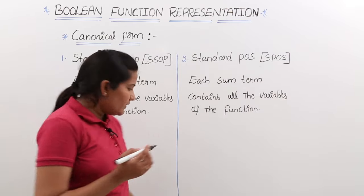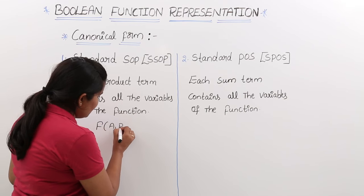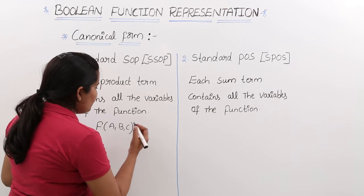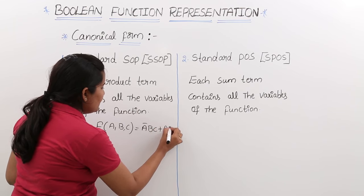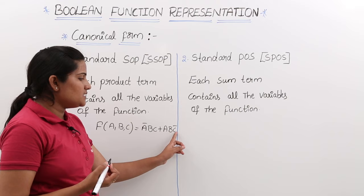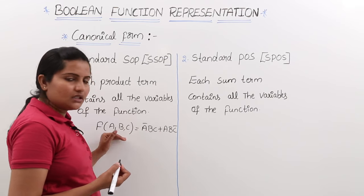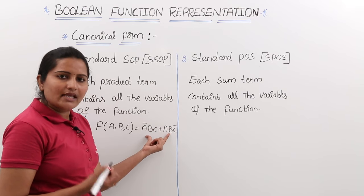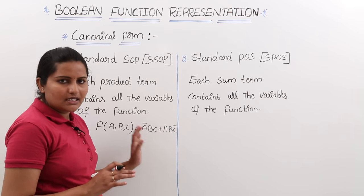For example, take the function f(a, b, c). By seeing itself you can say this is a three-variable function. For this three-variable function I am giving the expression: a-bar·b·c + a·b·c-bar, or like this: a-bar·b·c + a-bar·b·c + a·b·c-bar. This three-variable function expression has two product terms. By seeing itself we can say this is SOP form because all the product terms are summed together.